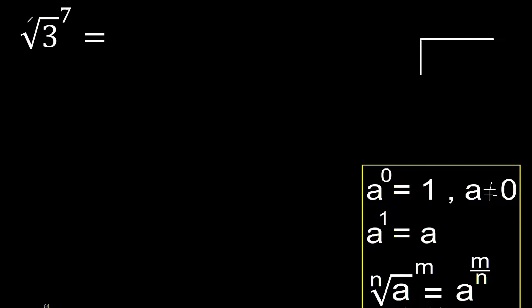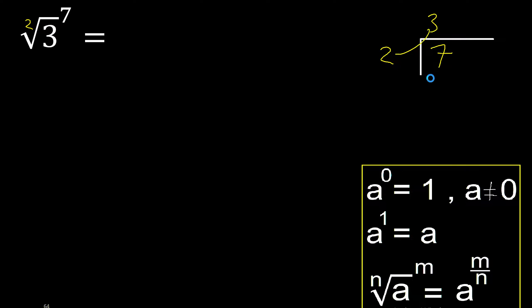Here, there is no number, therefore it is 2. 7 is greater, therefore divide: 7 divided by 2. Multiply by which number is nearest to 7 but not greater — multiply by 4 is greater, multiply by 3 is 6. Subtract: remainder is 1.